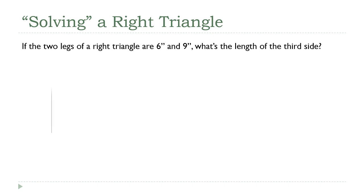I'm going to start by drawing a right triangle. I'm going to put a little box down here to make it clear what the right angle is. And we're given information about the two legs — the legs are the non-hypotenuse sides.